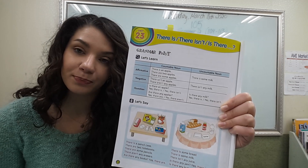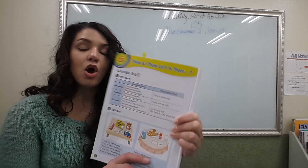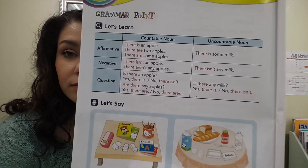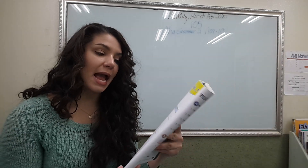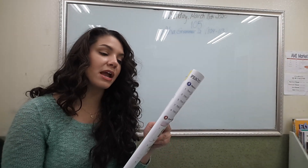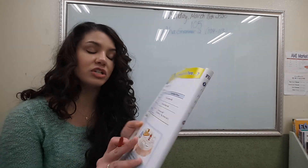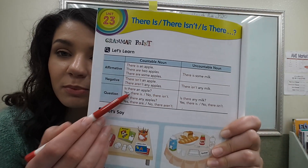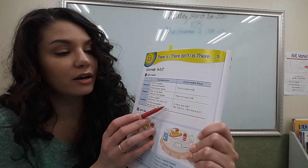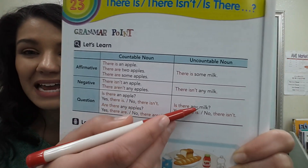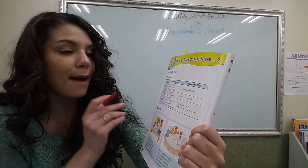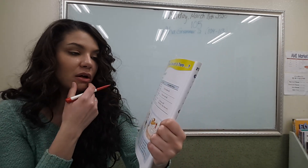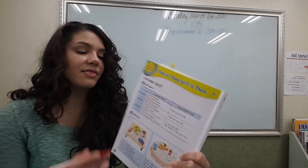For questions: 'is there an apple?' — yes, there is, or no, there isn't. 'Are there any apples?' — yes, there are, or no, there aren't. For uncountable: 'is there any milk?' — the question form doesn't change between countable and non-countable, it's still 'is there,' but instead of 'a' we use 'any.' Are there any apples? Is there any milk? Yes, there is, or no, there isn't. Don't forget the word 'any.'